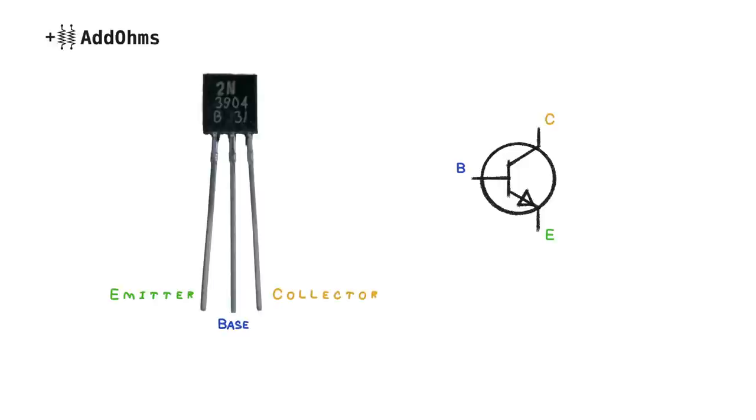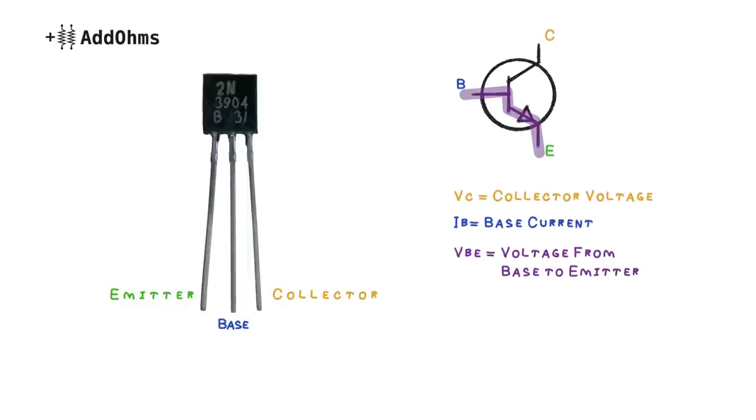Now when talking about voltages and currents at each of these terminals, we use subscripts like VC, which means the voltage at the collector, or IB, the current at the base. To describe voltage between terminals, we'll use two letters, like VBE. By the way, this is where the common term VCC comes from. It indicates the positive supply at the collectors of all of the transistors inside of an integrated circuit, or IC.